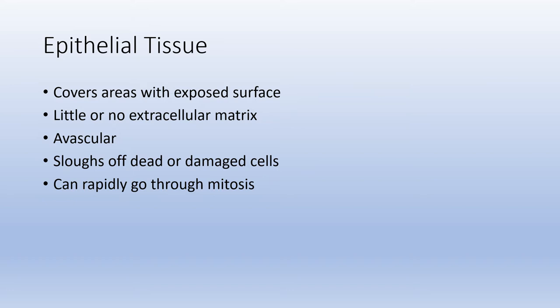Now we'll look at the four different types of tissues — nervous, muscle, connective, and epithelial — with examples of each. Epithelial tissue covers areas and has one exposed free surface. There is very little or no extracellular matrix, which is material outside of the cell.